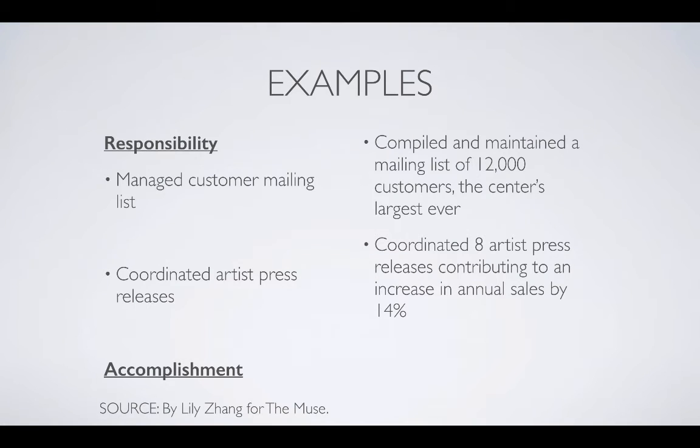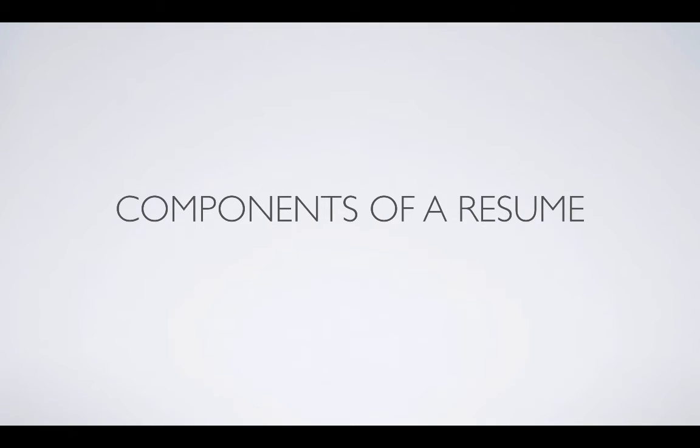Some more on responsibilities and accomplishments. A responsibility for a marketing position might say 'managed customer mailing list.' An accomplishment would be 'compiled and maintained a mailing list of 12,000 customers, the center's largest ever.' What makes that an accomplishment is it throws in that metric of 12,000, and you noted it was the center's largest ever. If that's the case, that's something you're proud of, you want to put that on there. 'Coordinated artist press releases' is a job responsibility, job description. What makes an accomplishment is that you did eight of them and it contributed to an increase in annual sales by 14%. If you can find examples like that in the work you've done, that's what you put in those bullet points.